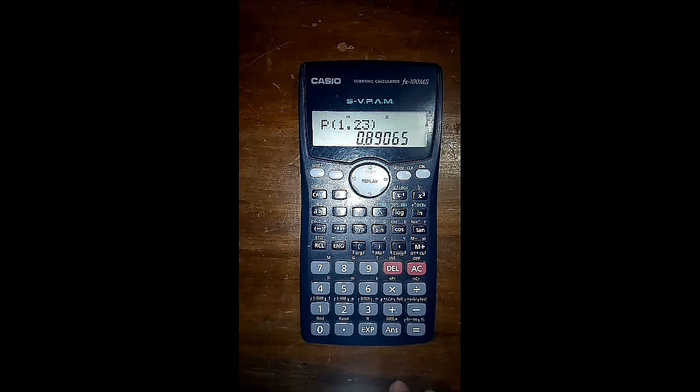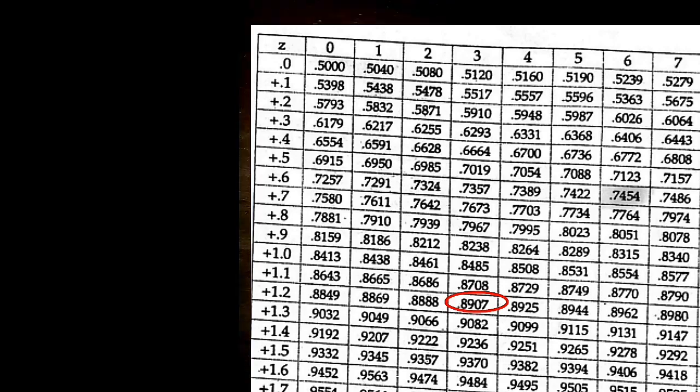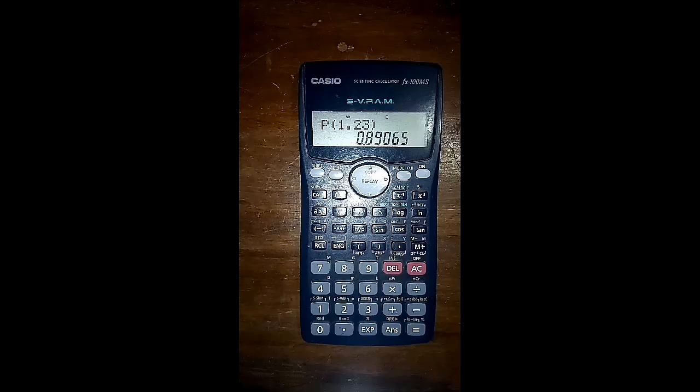Now I have the value 0.89065, and from the table you can see 0.8907, that is equivalent to 0.8906.